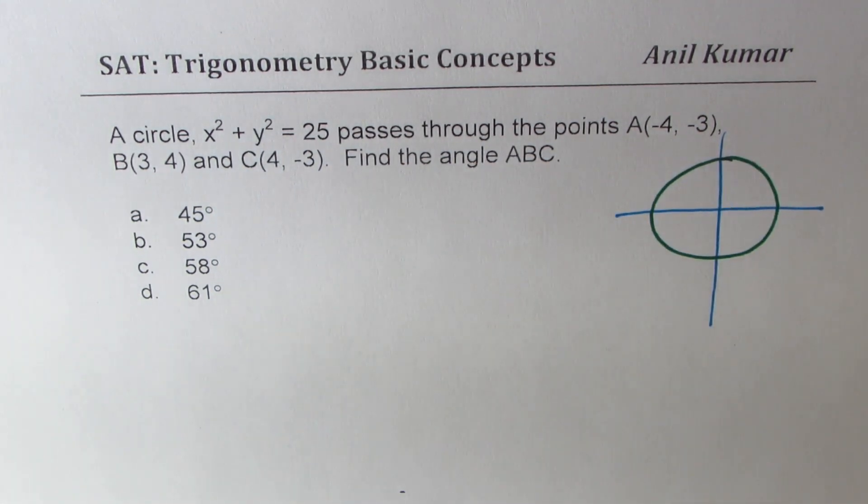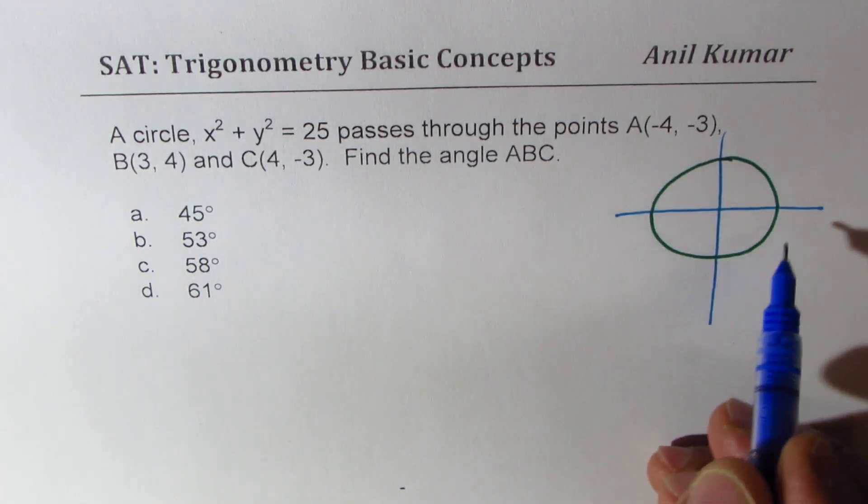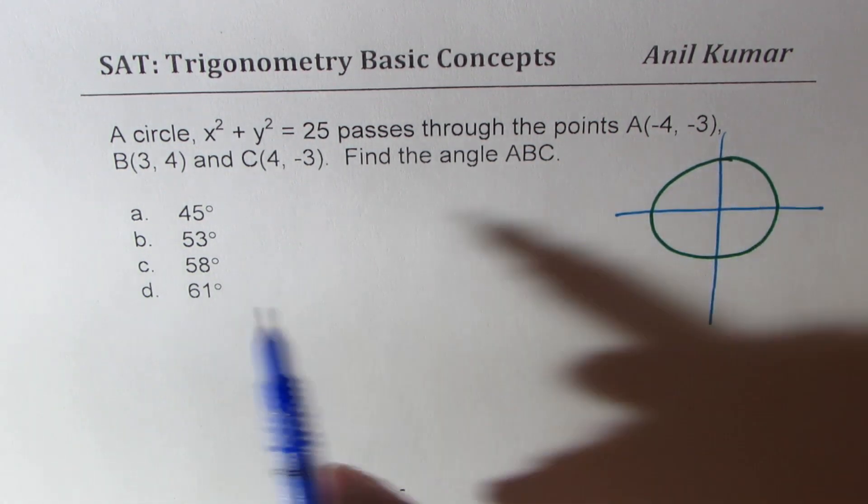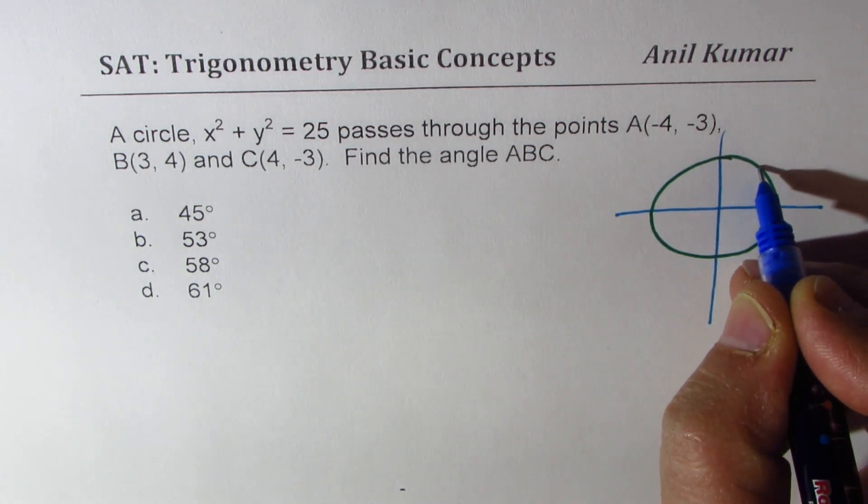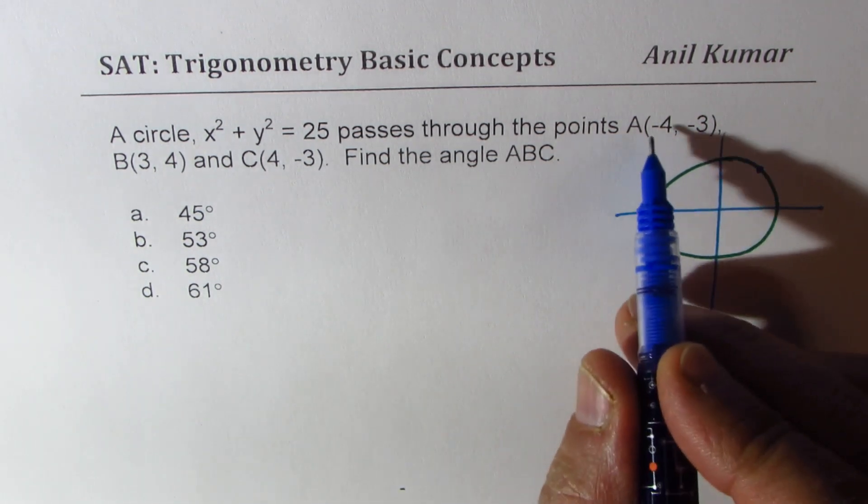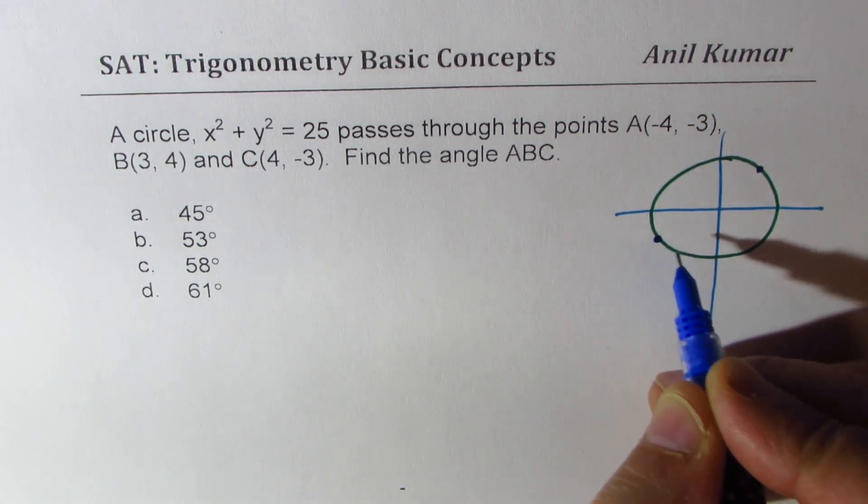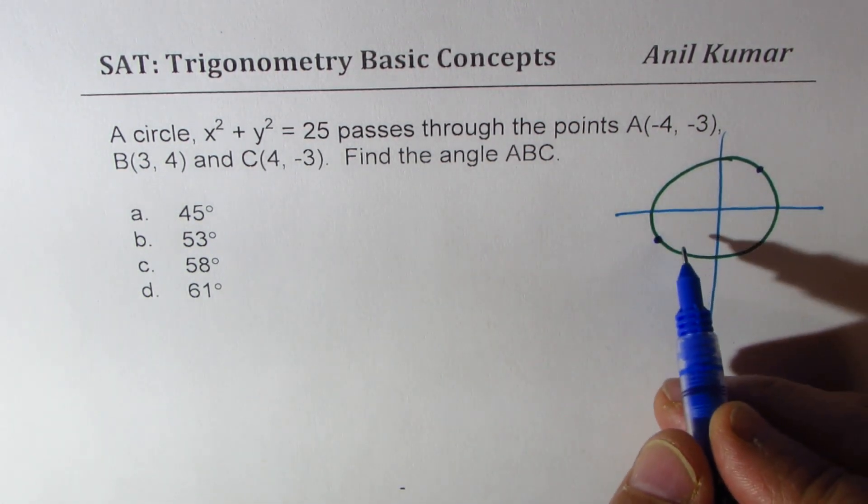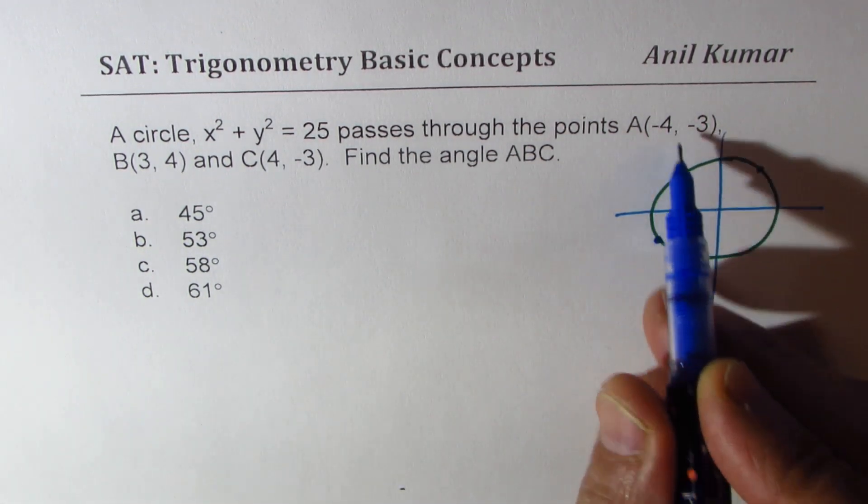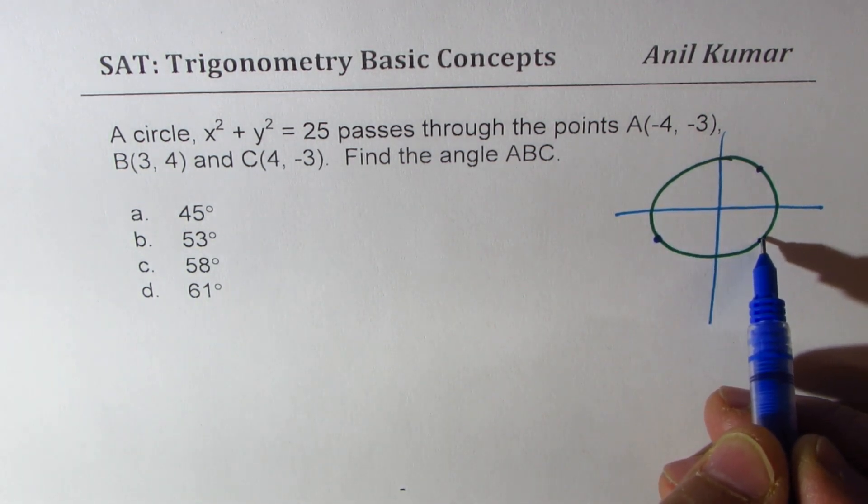This is the circle x² + y² = 25, which means the radius is 5 units, and these points 3, 4 with positive or negative sign will definitely be on the periphery or circumference of the circle. So let's say 3 and 4 is a point right there, and then we have -4 and 3, so -4 and 3 is somewhere there, and 4, -3 is horizontally placed right there.